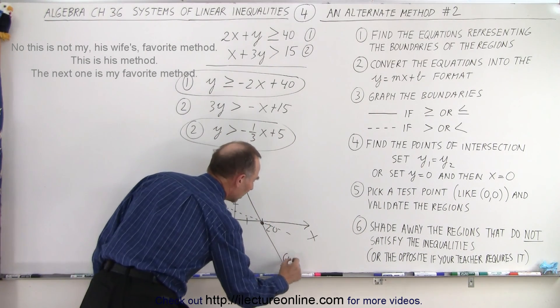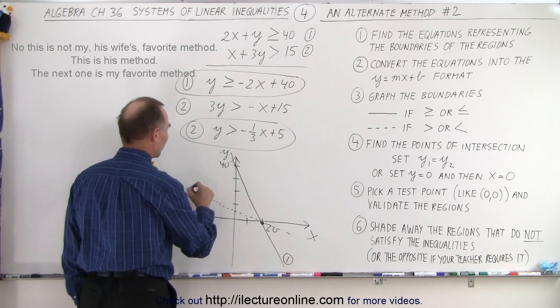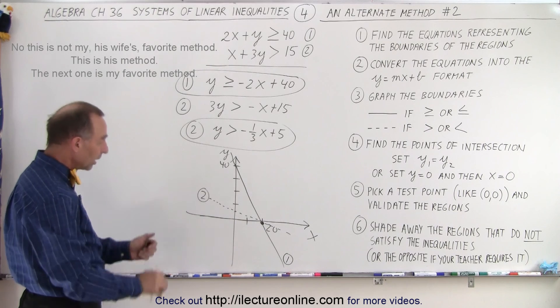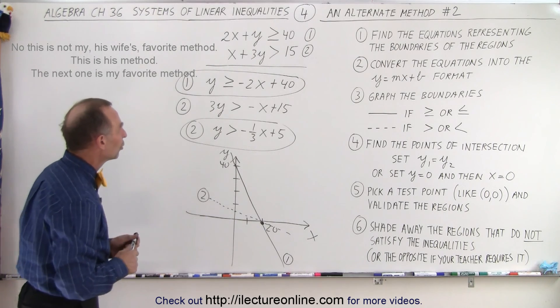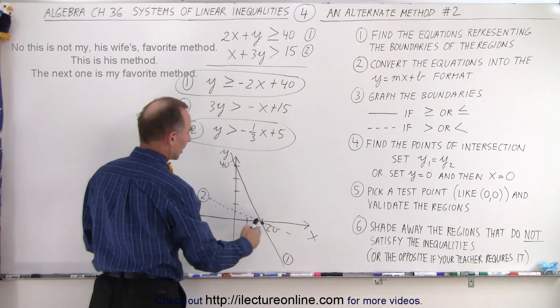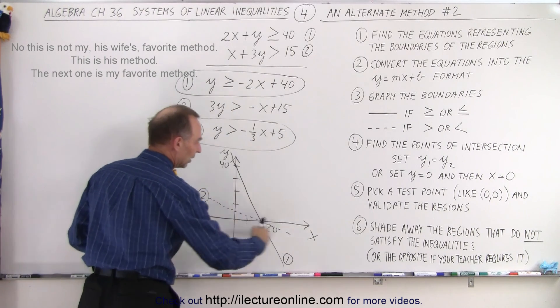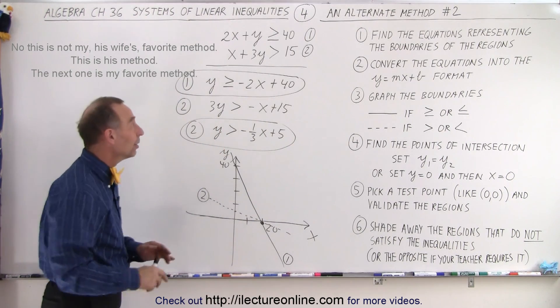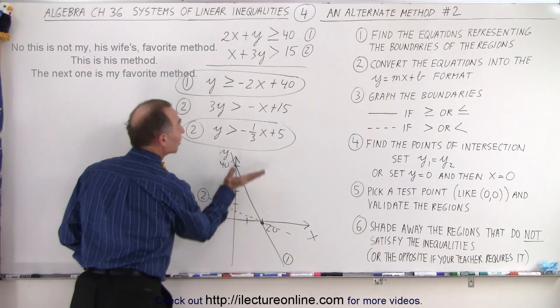So this is line number 1, and this is line number 2, representing the boundaries of those two inequalities. So then the logic is as follows: you're looking for y to be greater than or equal to -2x + 40. And of course, x can be a value that goes anywhere from a big negative number to a big positive number. But it doesn't matter. Y will be greater the higher that you are.